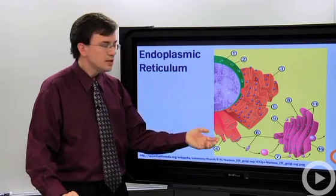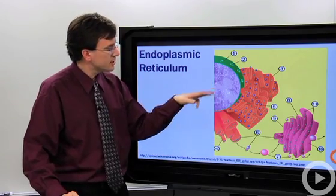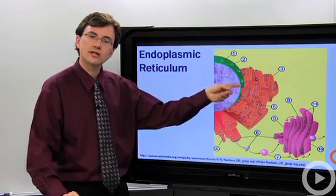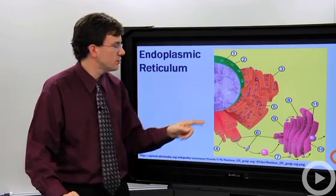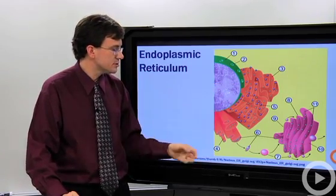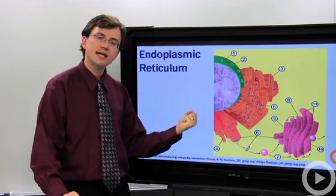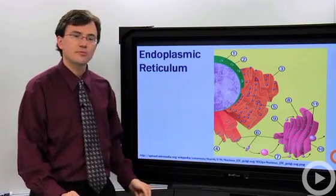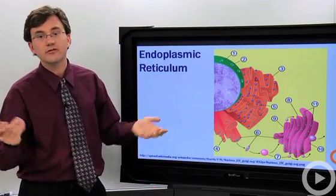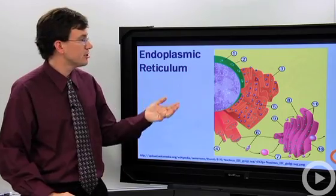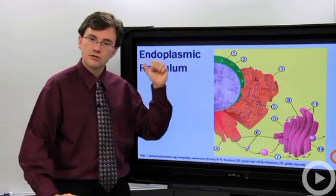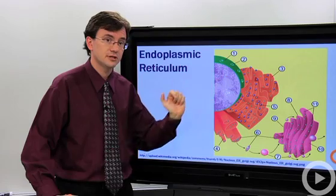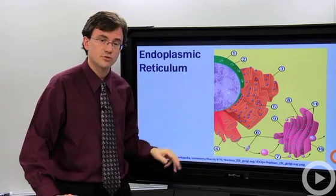The smooth endoplasmic reticulum may not be directly hooked up to the nucleus, although its interior ultimately connects somewhere to those rough ER interiors. It takes the materials coming in through the cell and sends off little sacks of membrane out to whatever part of the cell needs them. The endoplasmic reticulum has two main parts — rough and smooth. Rough does proteins, smooth does not.